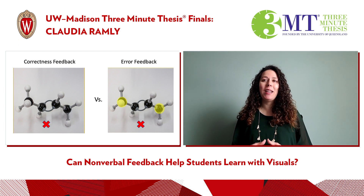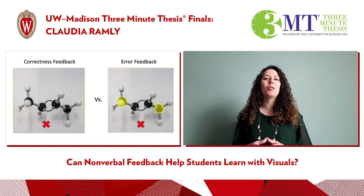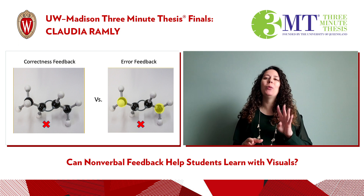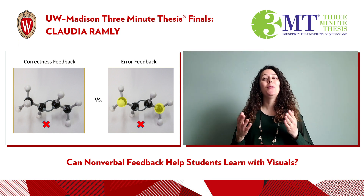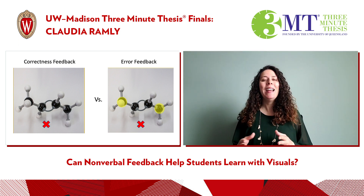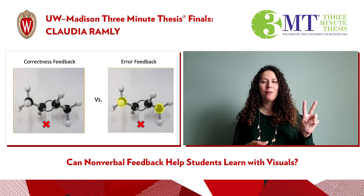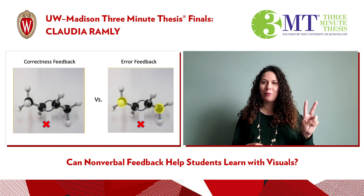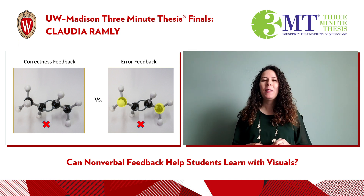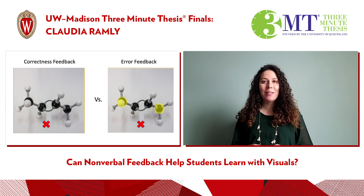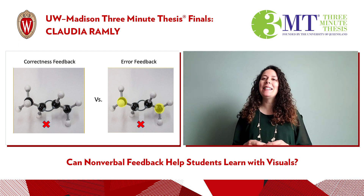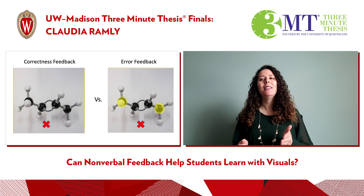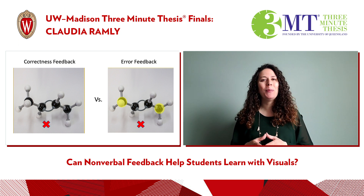I developed an online training for chemistry undergraduates where they have to pick the correct molecule from four choices. To help them learn, the software gives them two types of feedback: correctness feedback or error feedback. The first type, correctness feedback, indicates whether the answer is correct or incorrect, like the first example in the image.